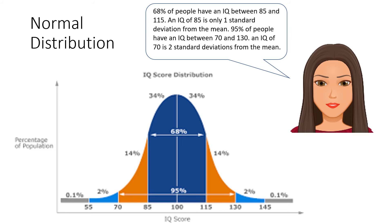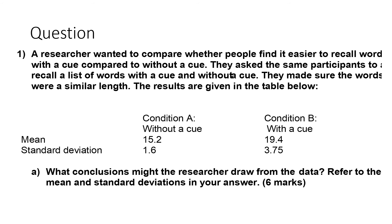Standard deviation shows us how spread out the data is. A researcher wanted to compare whether people find it easier to recall words with a cue compared to without a cue, using the same participants for both conditions. The mean for condition A (without a cue) is 15.2 and for condition B (with a cue) is 19.4. The standard deviation for condition A is 1.6 and for condition B is 3.75.